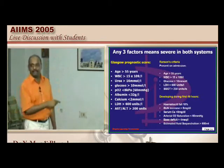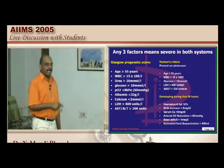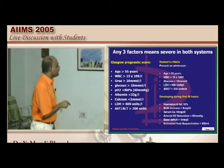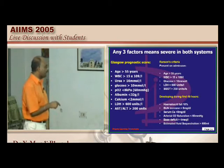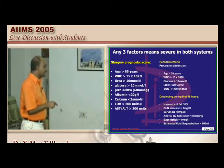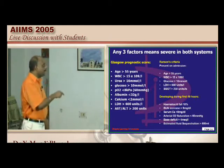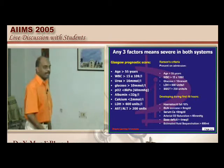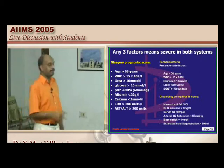During the first 48 hours of Ranson's criteria: hematocrit fall, BUN increase, serum calcium less than 8, oxygen saturation, base deficit, and fluid sequestration are important. LDH and other parameters are important at admission.